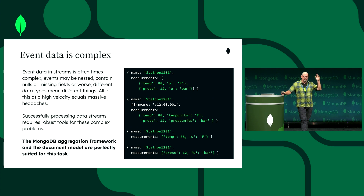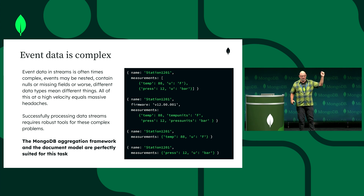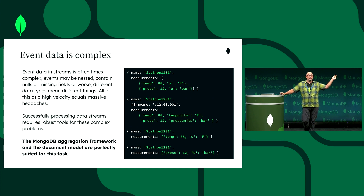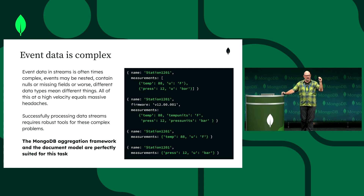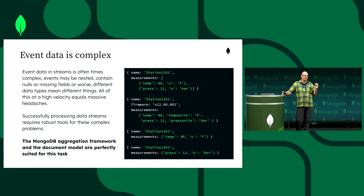In this example, we have a number of measurements. The top one has a measurements array with temperature. The next one spells it differently. The next one below that is all in one line or is missing data — it doesn't have the complete payload. This is normal streaming data. A lot of us think streaming data is a nice, pure, perfect piece of data always coming in on a perfectly timed schedule, never late, always with a perfect schema. In reality, it's not. The document model works great for streaming — maybe even more importantly than it ever did in the database.